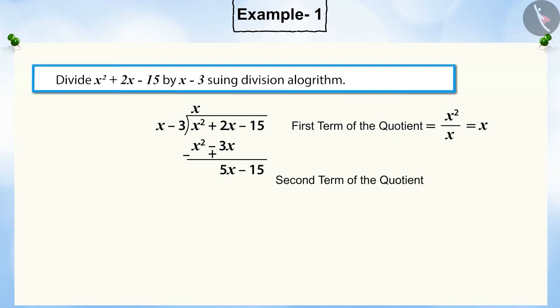To get the second term of the quotient, divide the highest power term in the new dividend, i.e. 5x, by the highest power term of the divisor, x. By doing this, we get the second term of the quotient, 5. Multiplying the divisor by this quotient and subtracting it gives the remainder 0.